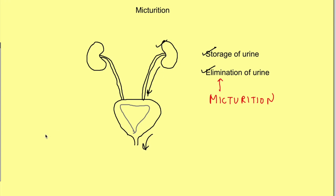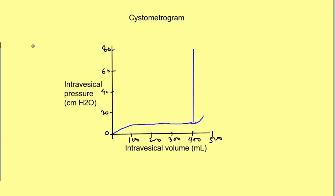This function of the bladder—storage of urine and elimination of the urine—is best understood by seeing a relationship between the intravesical pressure and the intravesical volume, what is known as a cystometrogram.